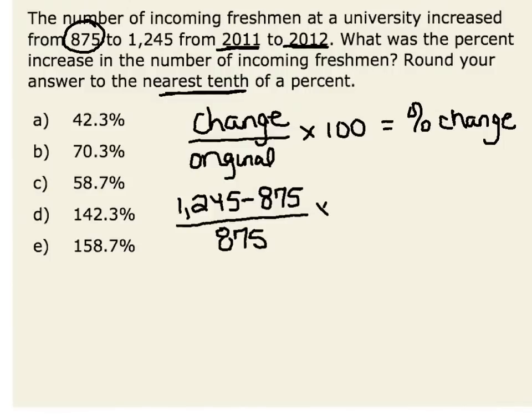Again, we would multiply this result by 100 in order to give us our answer in terms of a percent. Let's look at this change. Taking 1,245 minus 875 gives us 370. That means the number of incoming freshmen increased by 370 students from 2011 to 2012. Divide this by our original 875 incoming freshmen.